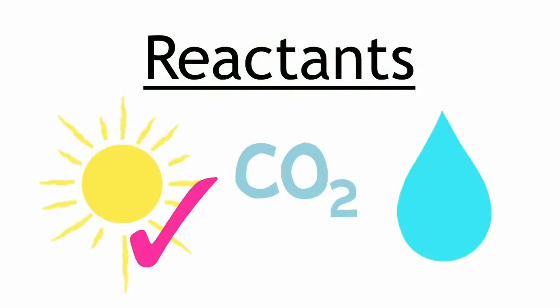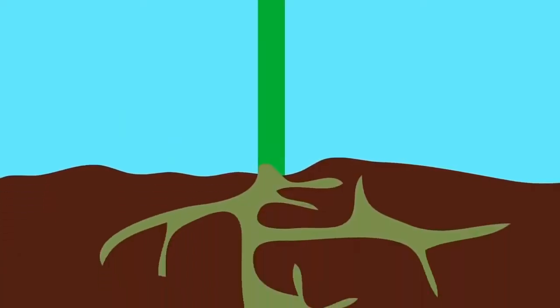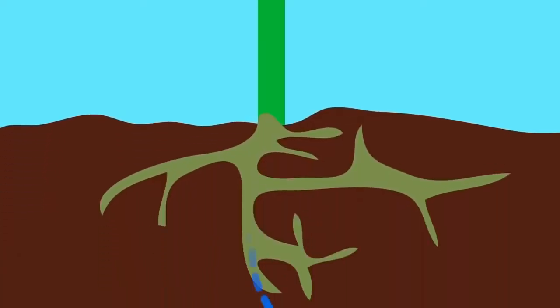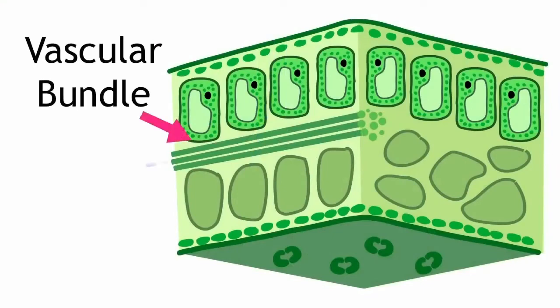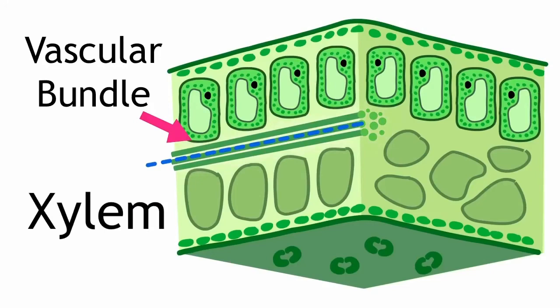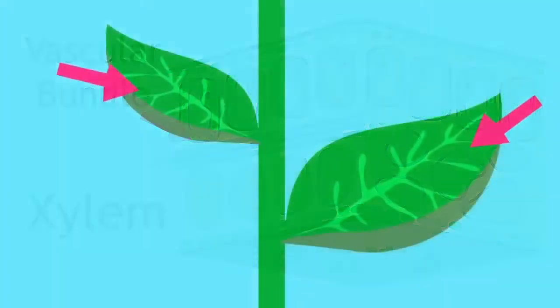So we've got sunlight and carbon dioxide now. What's left? Water. Water comes up through the roots and stem and enters the leaf through a vascular bundle, which contains a hollow tube for water transport called the xylem. Look at how the vascular bundle spreads out in the leaf to form veins so that it can spread water throughout.